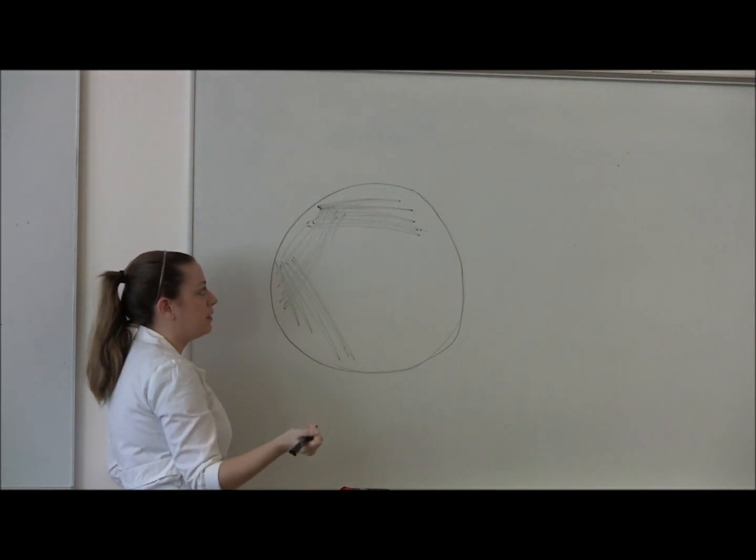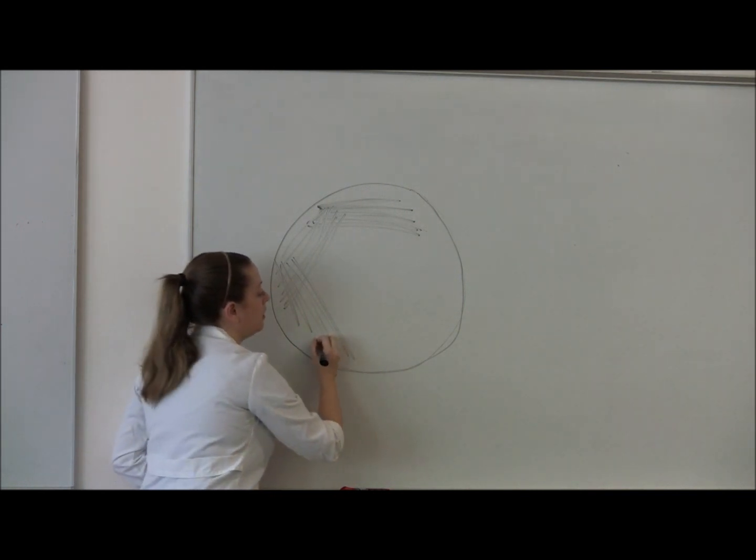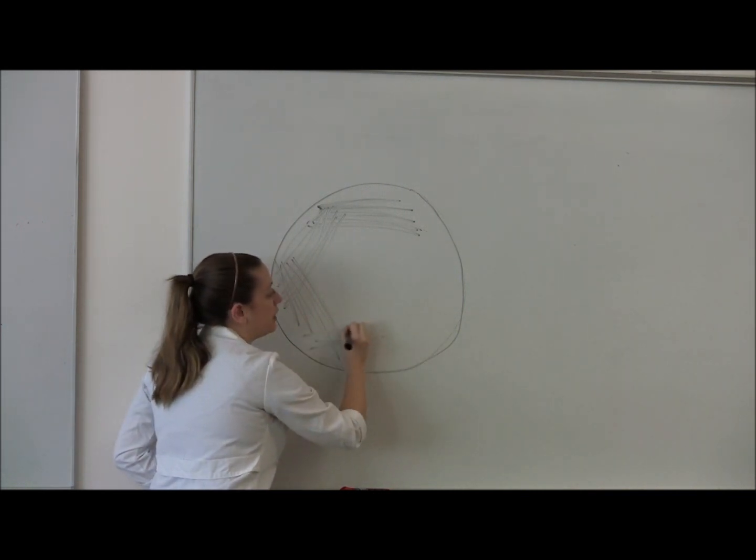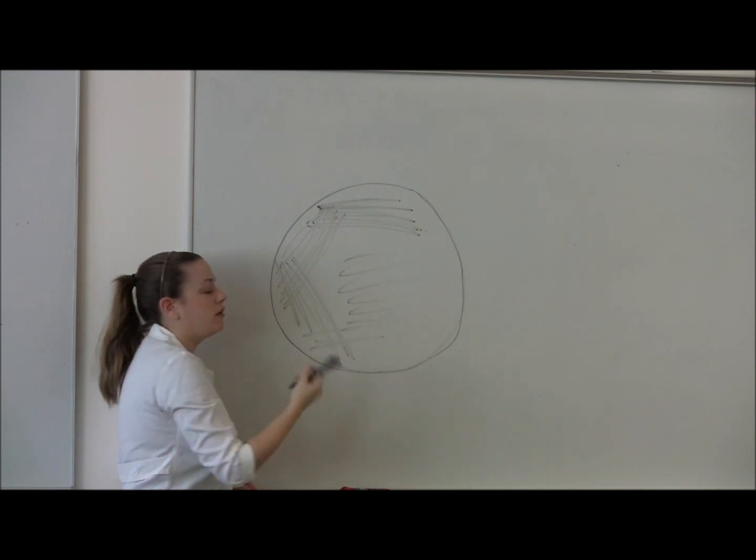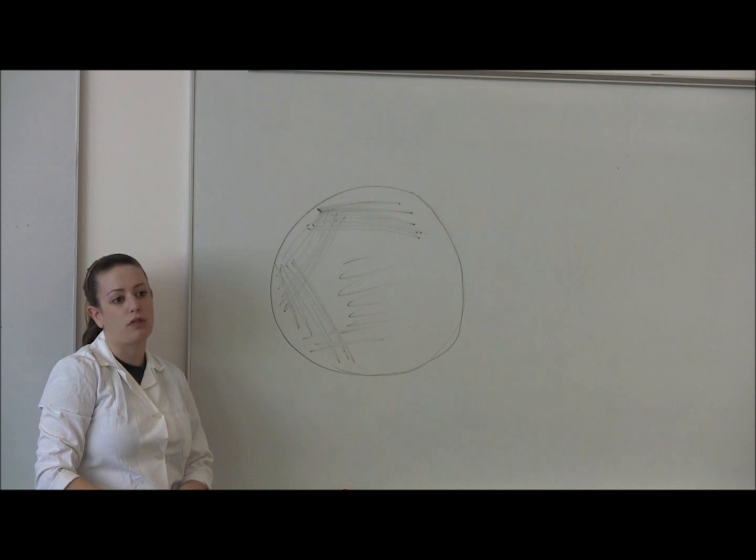Once again, you'll flame your loop, and you'll do your last, fourth quadrant. This is where you want your isolated colonies, and you'll spread this out and hopefully get isolated colonies in the fourth quadrant.